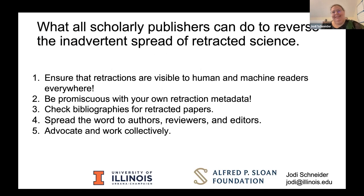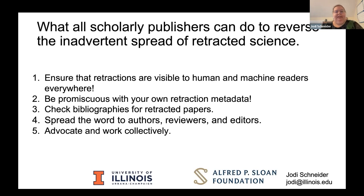To conclude, what scholarly publishers in general can do to reverse the inadvertent spread of retracted science: make sure that your retractions are visible to human and machine readers everywhere things appear on your sites, on aggregator sites, in every place — be promiscuous with your retraction metadata. Check bibliographies for retracted papers. Help in this education — authors, reviewers, and editors need to understand more about what options are available post-publication. People are often really nervous about retracting things, but for authors doing an honest retraction, it can actually be a really positive thing recognized by the scholarly community.